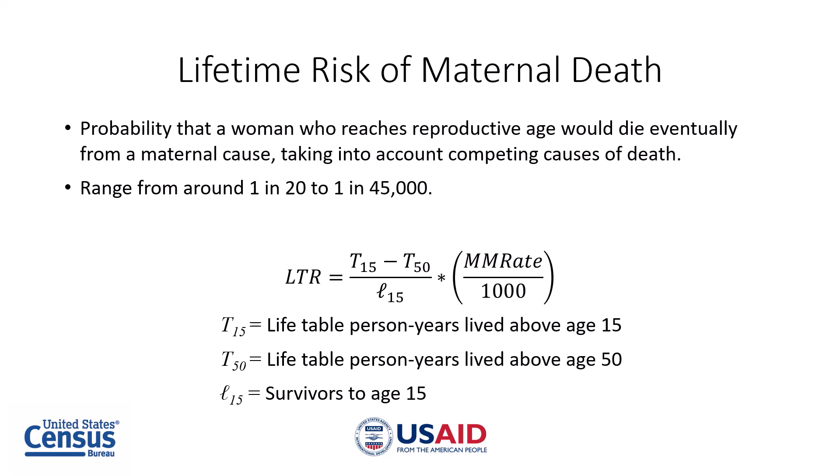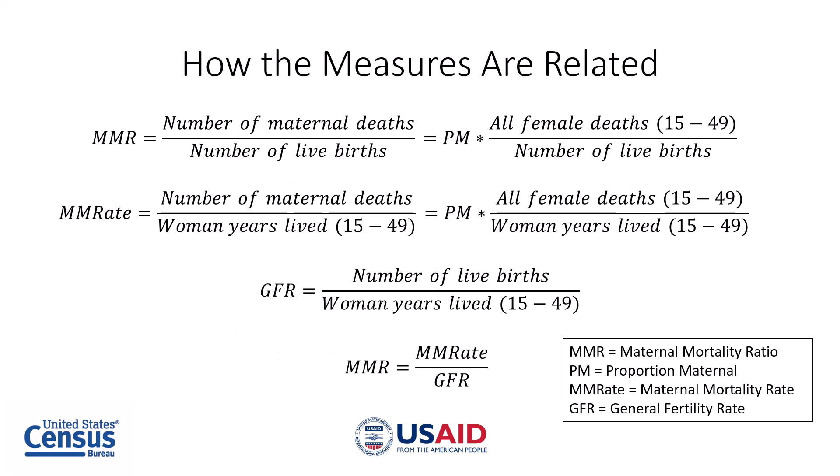There are many ways of calculating lifetime risk; the formula shown in this slide illustrates the concept. We will not be calculating lifetime risk in this course. The slide shows how these measures are related to each other. You can calculate MMR from PM, or proportion maternal. Similarly, you can calculate MM rate from proportion maternal. MMR can also be calculated from MM rate and GFR, the general fertility rate. These convergences will come in handy later when we discuss the methods for adjusting maternal deaths.